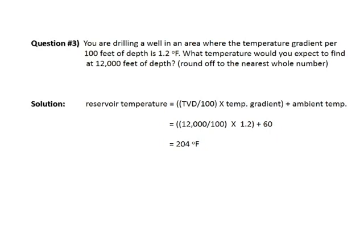The solution is reservoir temperature equals the true vertical depth divided by 100 times the temperature gradient plus the ambient temperature. So, reservoir temperature would equal 12,000 divided by 100 times 1.2 degrees Fahrenheit plus 60 degrees Fahrenheit, and the reservoir temperature would be 204 degrees Fahrenheit.